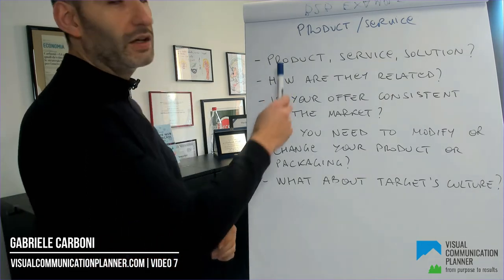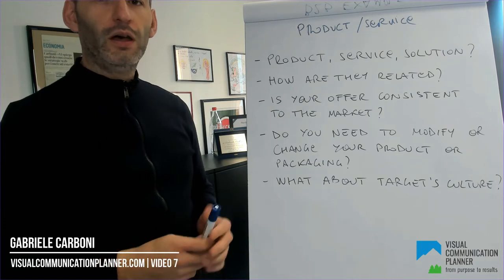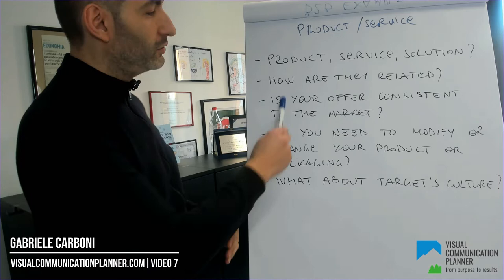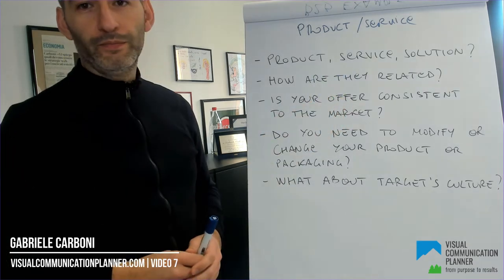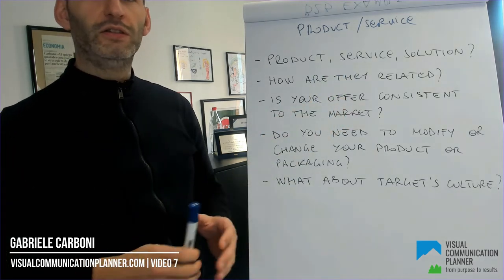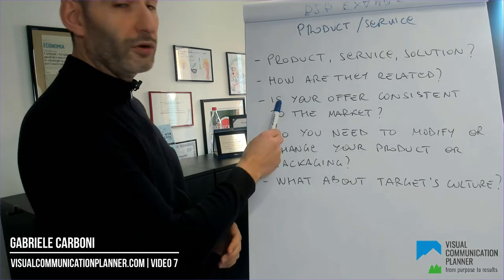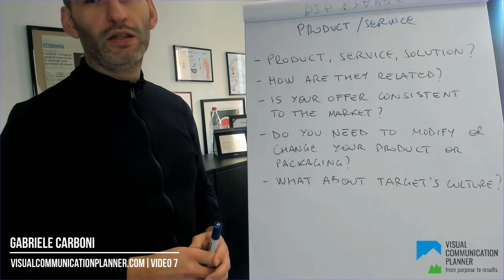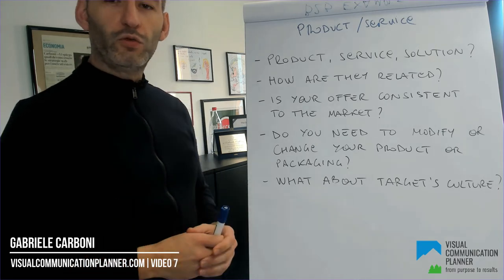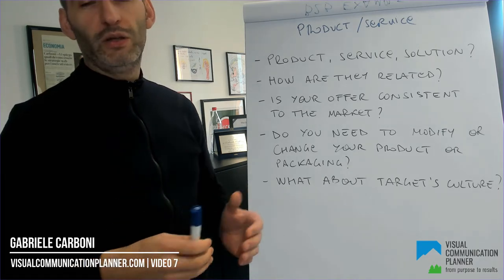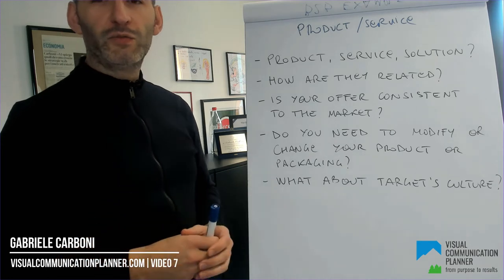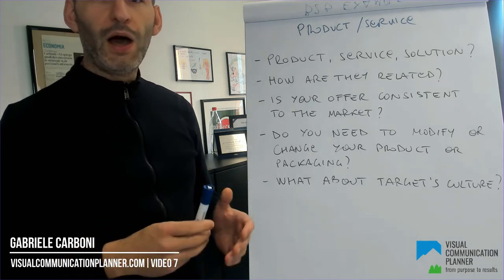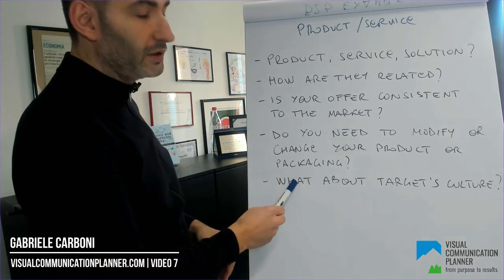Do you offer a product, service, or solution? How are these aspects of your offer possibly related to each other? Is your offer consistent in relation to the market you want to approach? Do you need to change your product or service in relation to the target you have set or the goal you have decided to achieve? Do you need to change the packaging, labels, or other aspects of the product or service for the market you have selected? How is your product or service perceived at a cultural level?